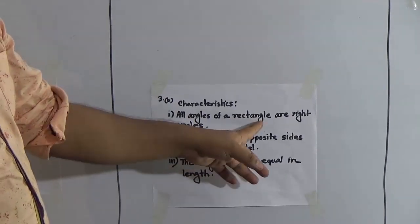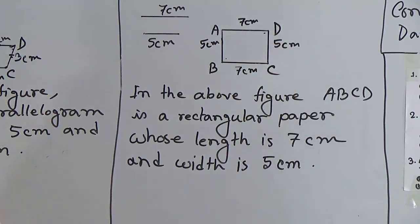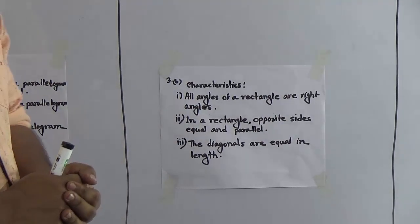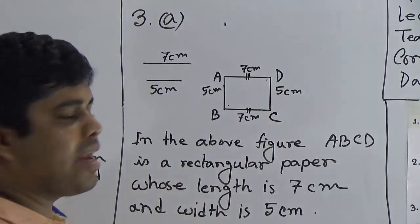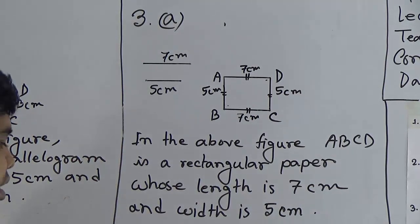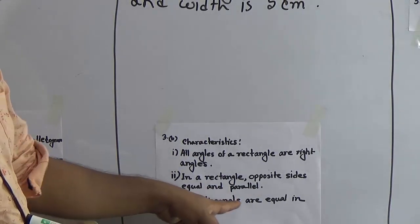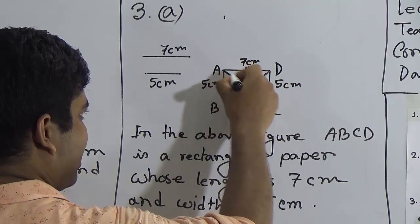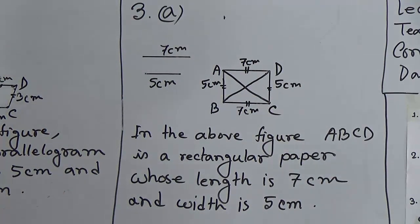Part 3B — characteristics of a rectangle. Number 1: all angles of a rectangle are right angles — this angle, this angle, this angle, and this angle are all right angles, each measuring 90 degrees. Number 2: in a rectangle, opposite sides are parallel and equal — BC and AD are parallel and equal, and AB and CD are also parallel and equal. Number 3: the diagonals are equal in length — if we draw both diagonals AC and BD, both diagonals are equal in length. I hope you have understood.